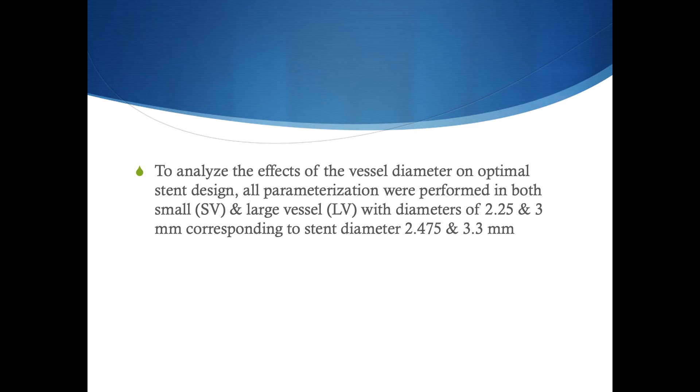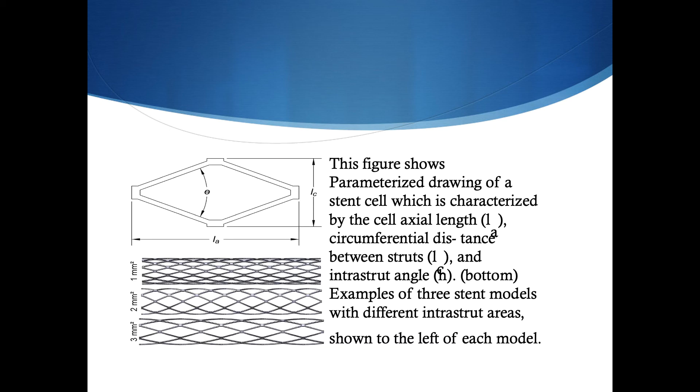After analyzing the diameter and length of the vessel and the designated optimal stent design, we achieve the optimum length of 2.25 and 3 millimeters to diameter of 2.4075 and 3.3 millimeters.